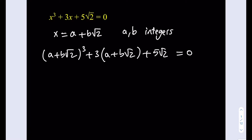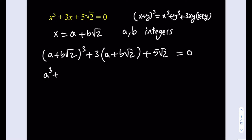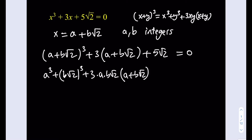There are many ways to expand it. One of my favorite ways: if you're expanding (x + y)³, I like to write it as x³ + y³ + 3xy(x + y). You can verify that this is equivalent to (x + y)³. So it's going to look like a³ + (b√2)³ + 3·a·b√2·(a + b√2), and then I'll distribute the 3 and add the 5√2 at the end. That equals 0.